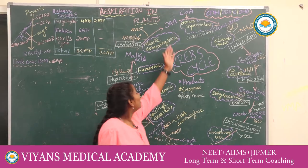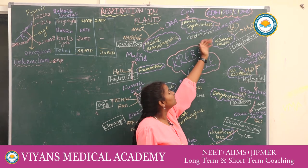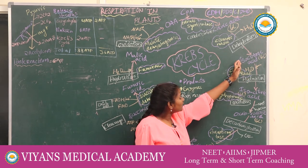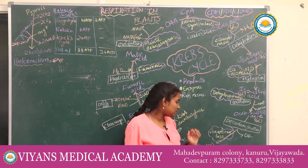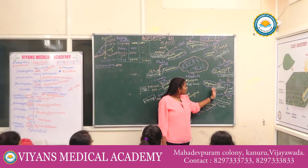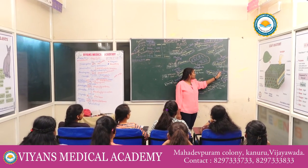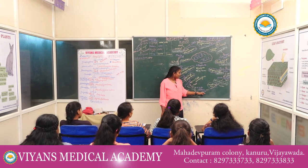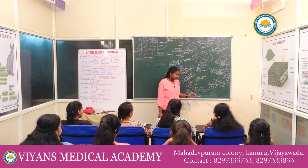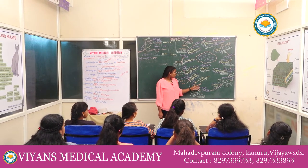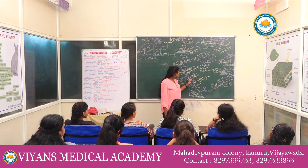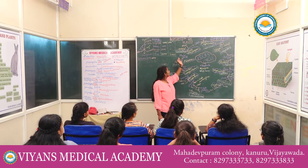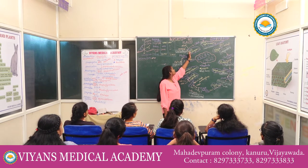Next, the Krebs cycle. Oxaloacetic acid is converted into citric acid in presence of citrate synthase. Citric acid is converted into isocitrate by aconitase. Isocitrate is converted into oxalosuccinic acid by isocitrate dehydrogenase, then into alpha-ketoglutaric acid by decarboxylation. Alpha-ketoglutaric acid is converted into succinyl co-enzyme A by succinyl thiokinase. Succinic acid is converted into fumaric acid by succinate dehydrogenase, fumaric acid into malic acid by fumarase, and malic acid back into oxaloacetic acid by malate dehydrogenase.